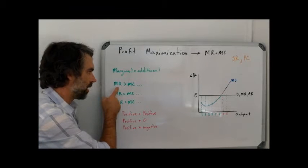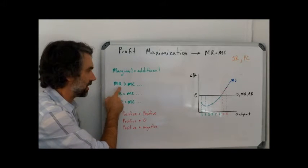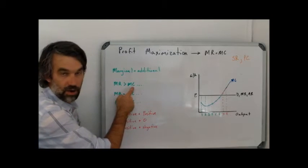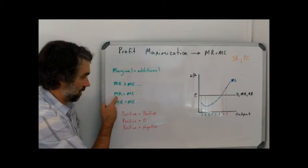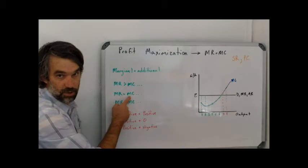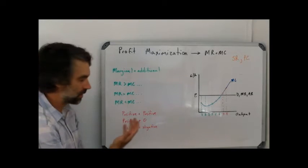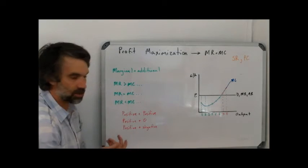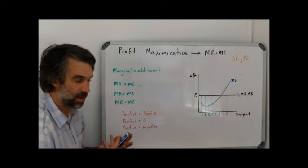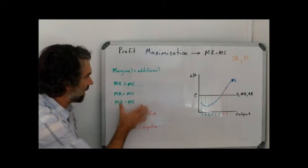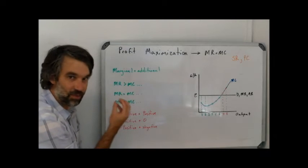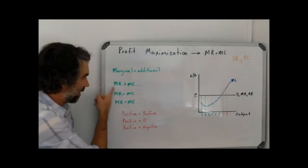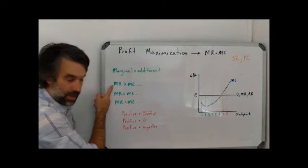If your marginal revenue, the additional revenue you get, is greater than the additional cost you incur, then that's going to be a positive number. If your marginal revenue is equal to your marginal cost, then that's going to be zero. And if your marginal revenue is less than your marginal cost, then that's going to be a negative number. So keep in mind, and this is what I'm getting at when I'm talking about marginal meaning additional.